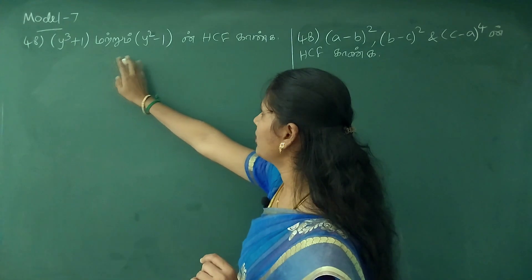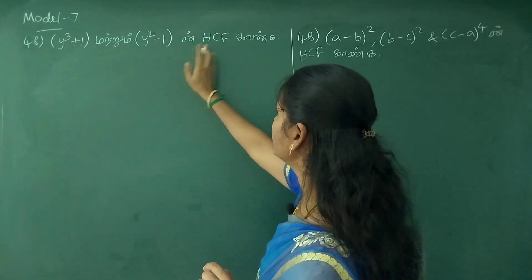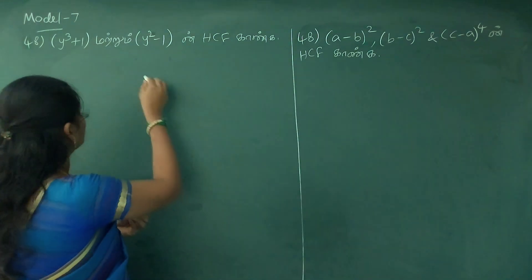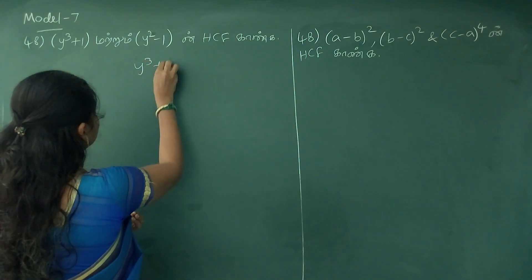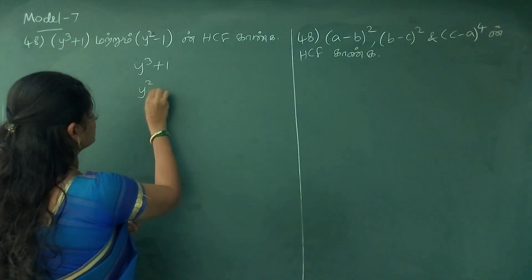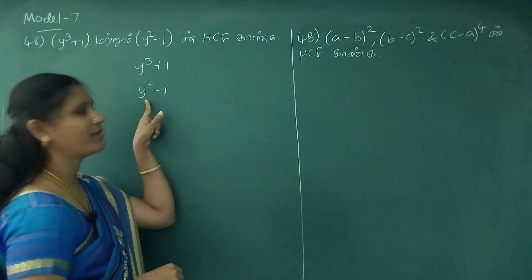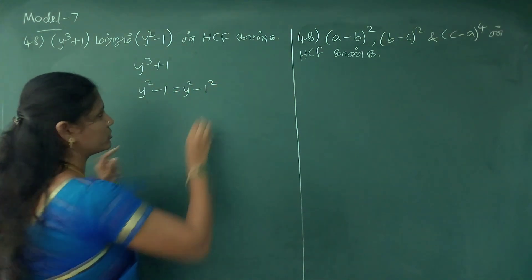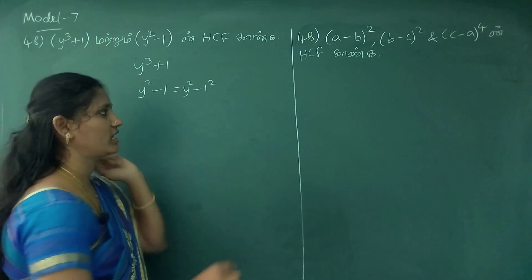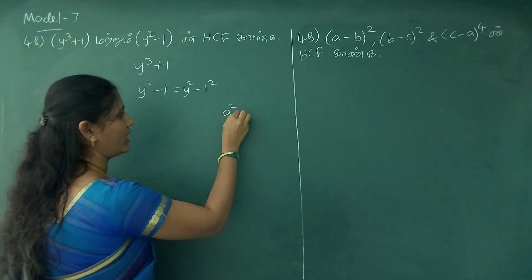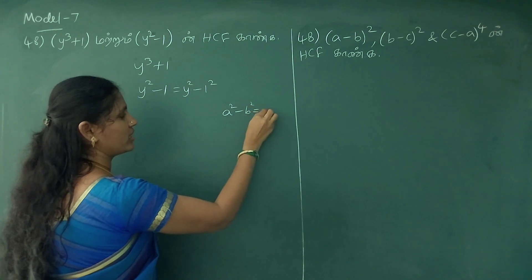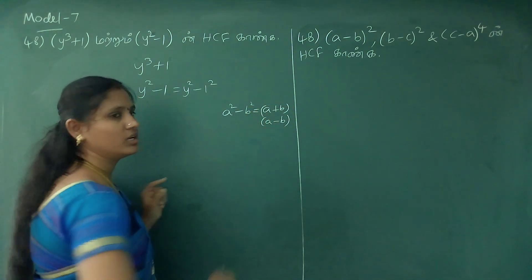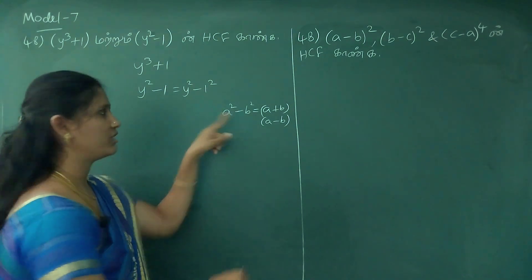y plus 1, y squared minus 1 in HCF. First equation, second equation. What is the formula? y squared minus 1. This is the formula: a squared minus b squared is equal to a plus b into a minus b.